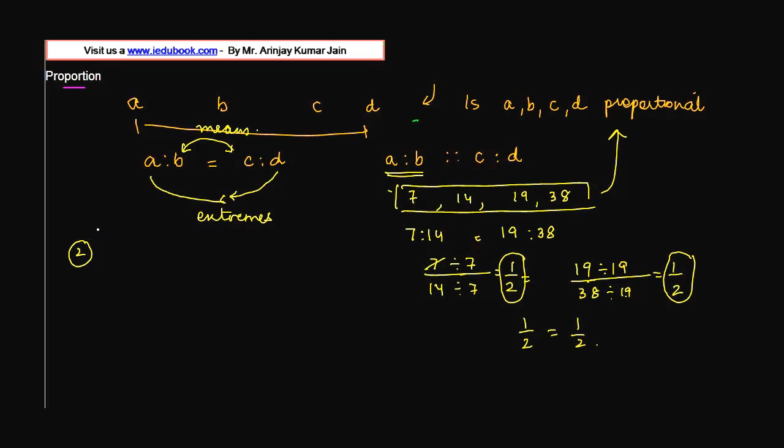Let us look at property number 2 of proportion. If these four numbers are proportional, one of the other qualities is that the product of their extremes would be equal to the product of their means. What are the extremes? A into D is equal to B into C.